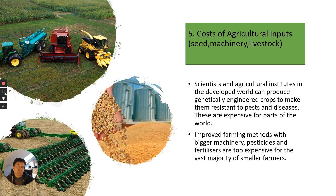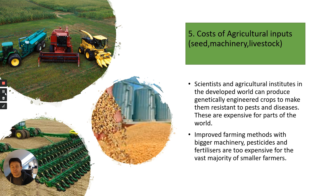Agriculture has changed in many parts of the world. It has become more efficient, which is a good thing, although there is a reliance on machinery and livestock, and on techniques such as selective breeding and genetic engineering to produce more resistant crops to pests and diseases. But these are very expensive, and parts of the world can't afford this technology — smaller farmers can't get the benefit of it.